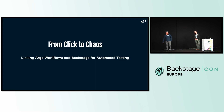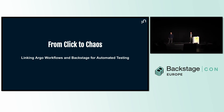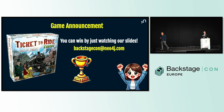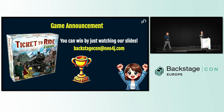Welcome to our talk titled From Click to Chaos: Linking Argo Workflows and Backstage for Automated Testing. We're going to start with a quick announcement — you can win this board game right now if you pay attention. On one of our slides there's going to be a secret code. You're going to see the secret code and this email address again, so don't worry if you can't write it down right now: BackstageCon at Neo4j.com. If you see the secret code, send an email to this address and the first one to send it will win the board game.